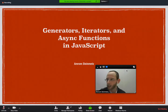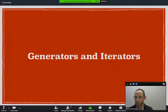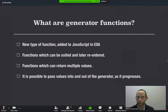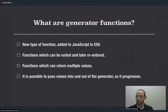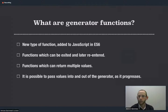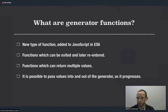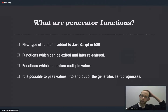So let's start with generator functions. What are generator functions? They are a new type of function added to JavaScript in ES6, and they are functions which can be exited and later re-entered. Unlike ordinary functions in JavaScript which just run from top to bottom when you invoke them, these functions can be started and stopped. They are functions which can return multiple values, and it is also possible to pass values into and out of the generators as it progresses.